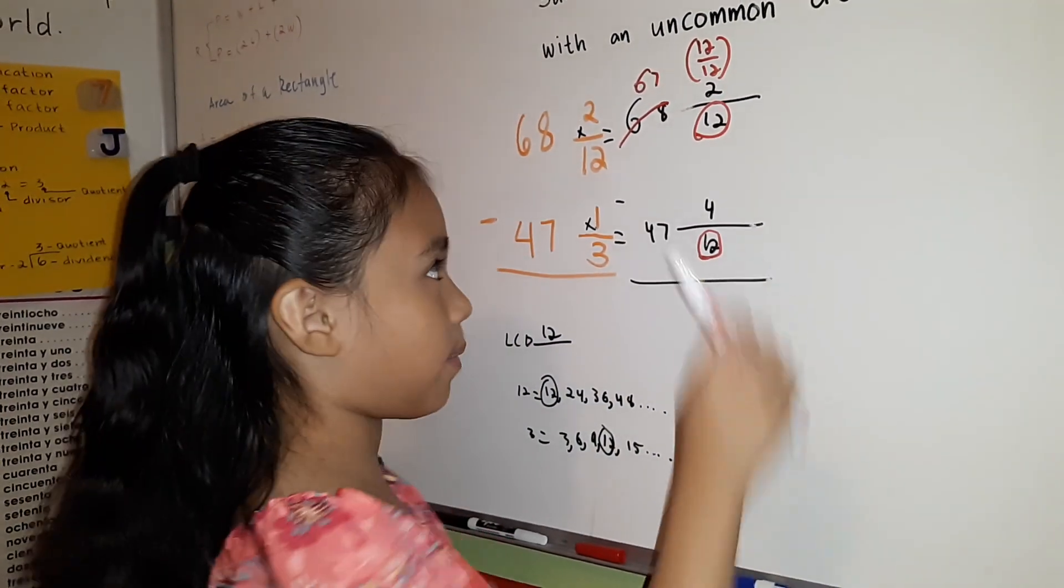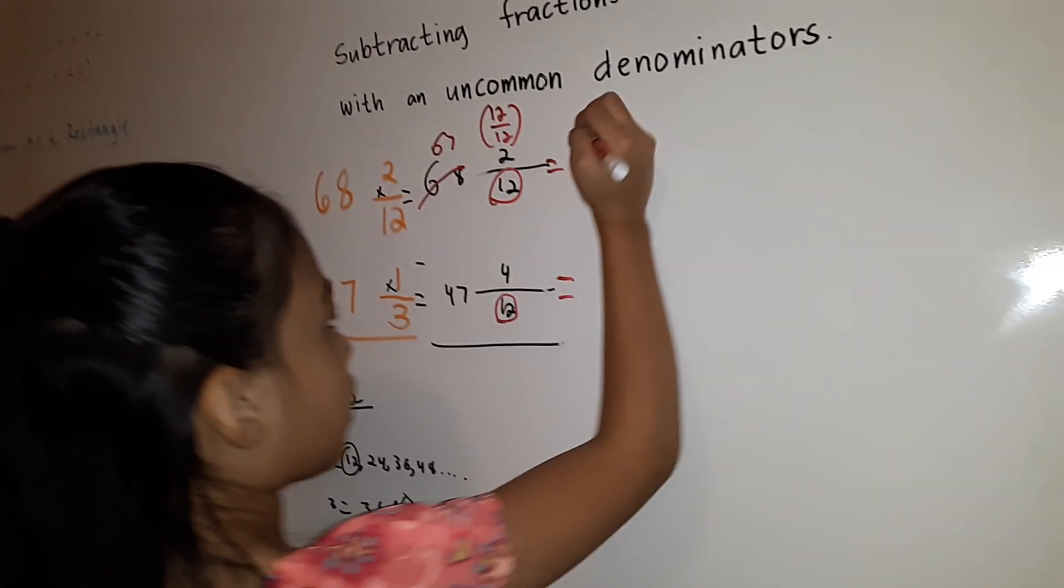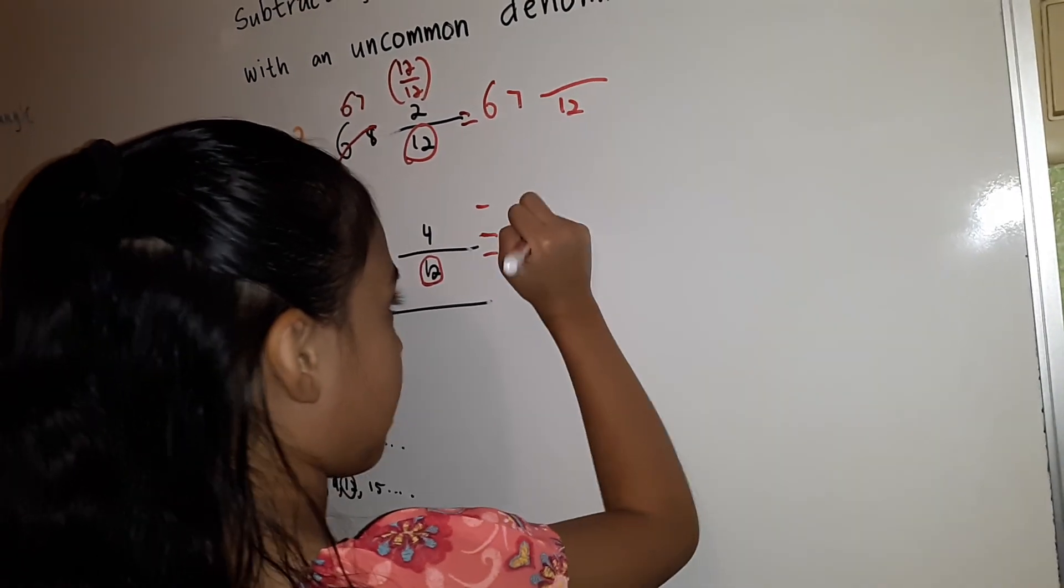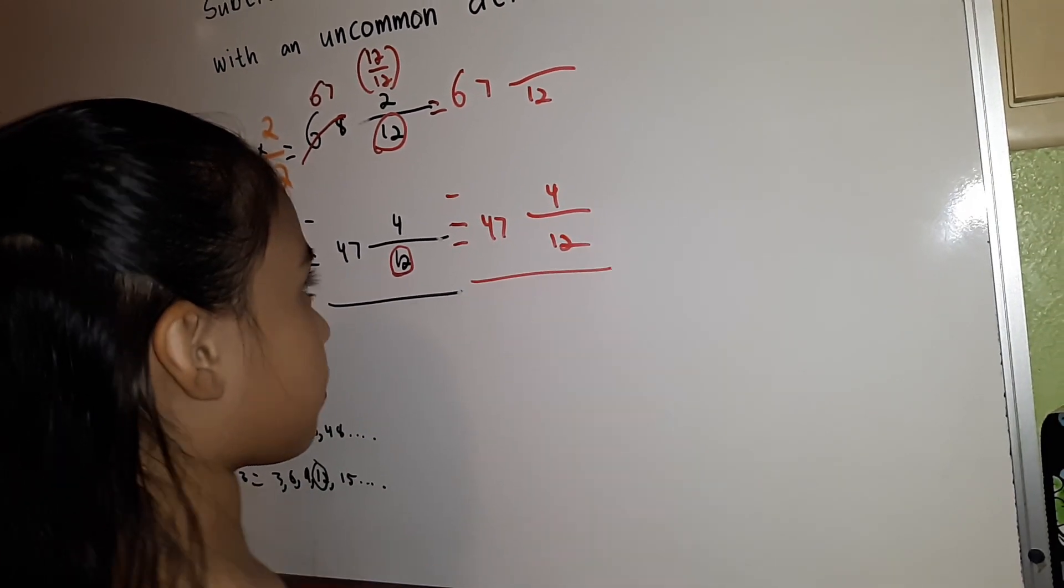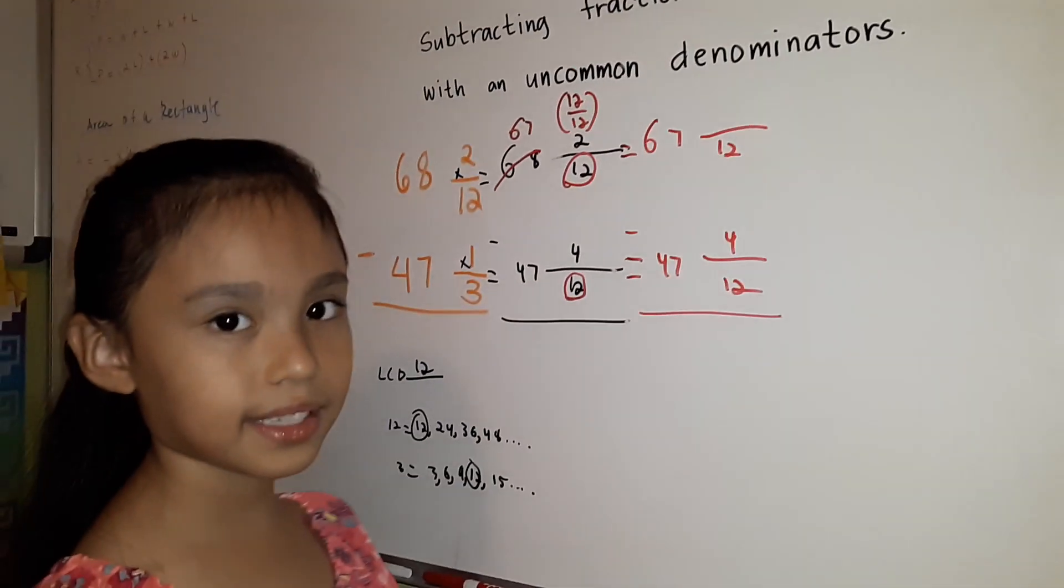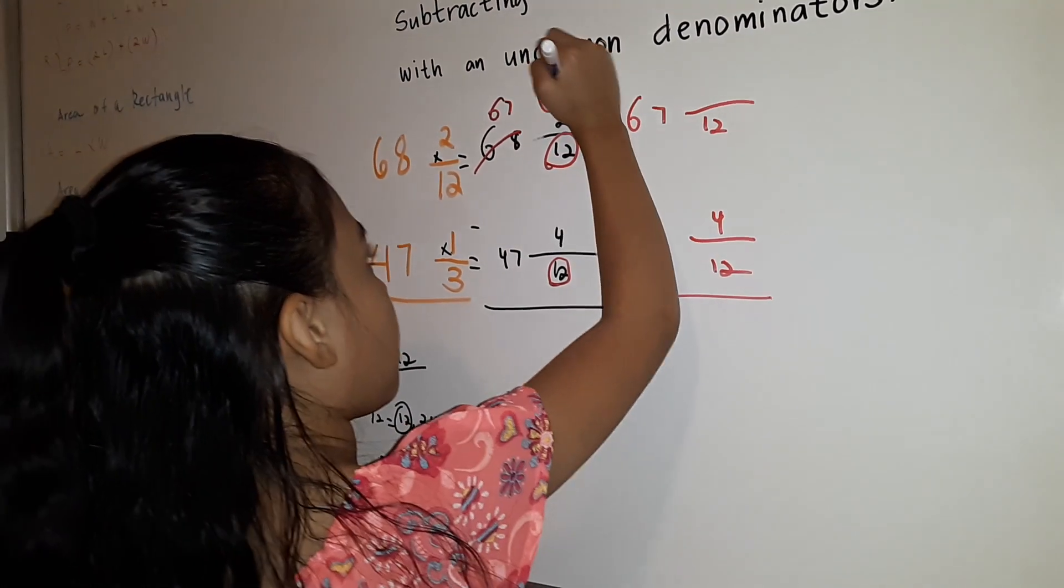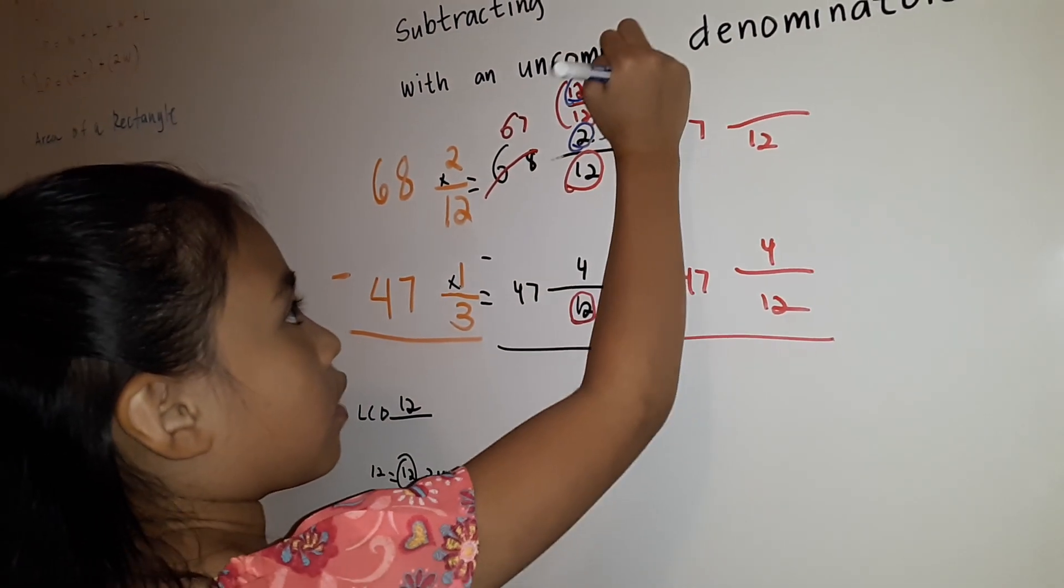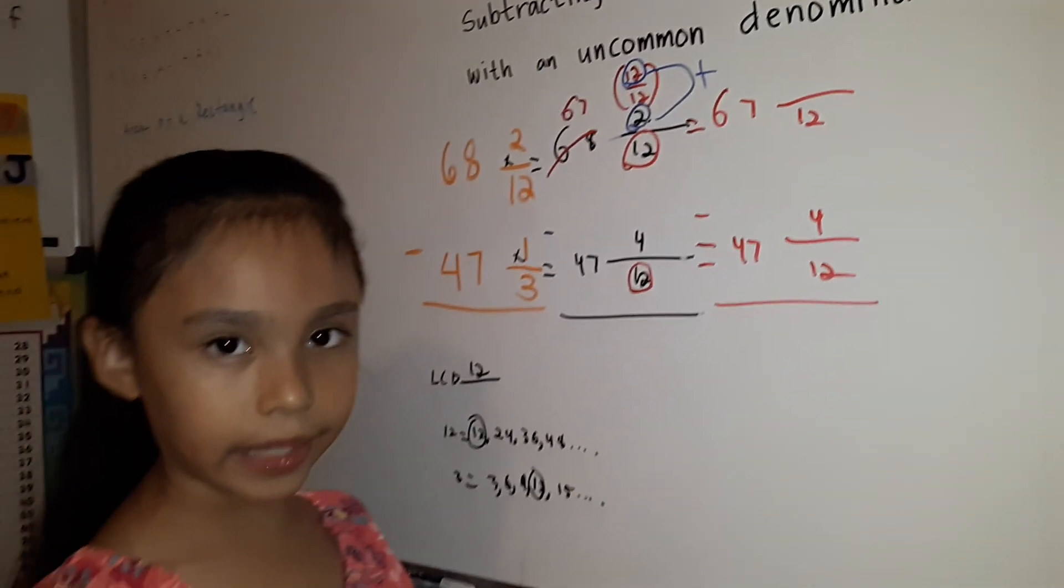We're going to rewrite our fractions except the numerator too. 67 and blank/12 minus 47 and 4/12 equals. To find the missing numerator over here, we're going to add numerator 12 to numerator 2. 12 plus 2 equals 14.